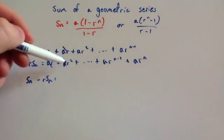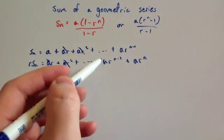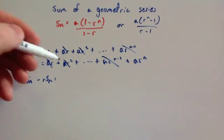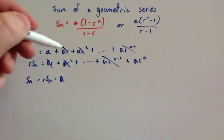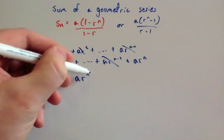AR squared minus AR squared, they will cancel out. So AR to the n minus 1 subtract AR to the n minus 1, they will cancel out. So you're just going to be left with A, the first term of this series, take away the last term in this series, which would be minus AR to the n.